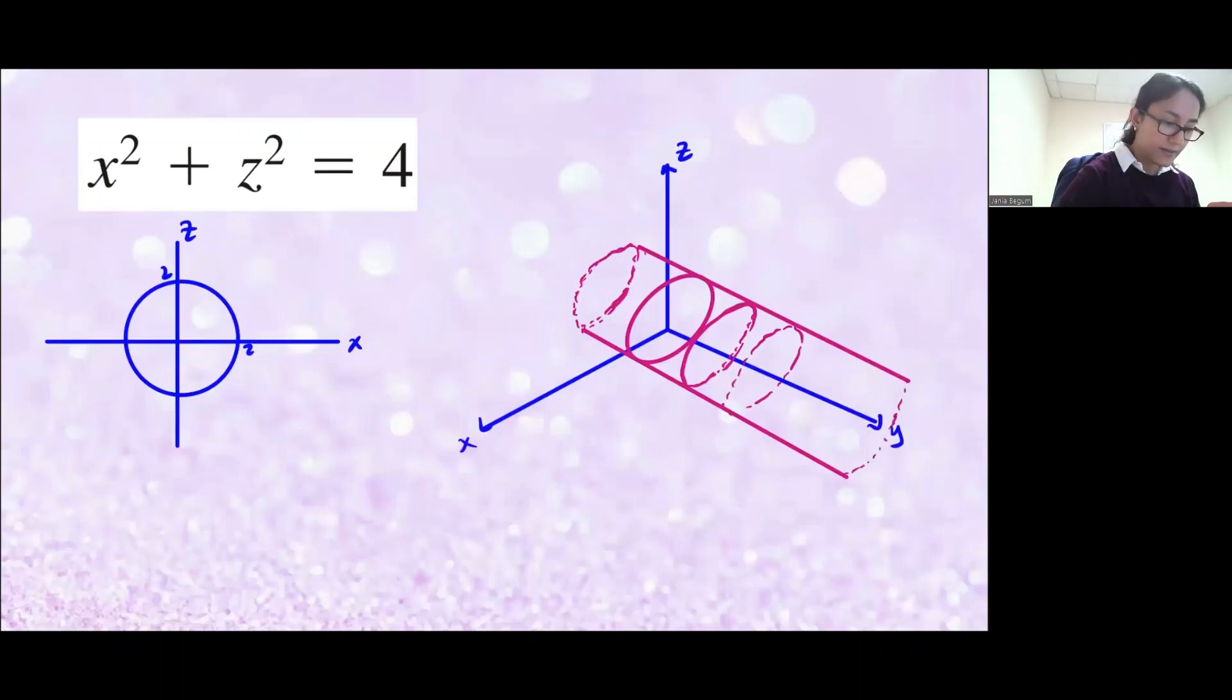Hopefully you got an idea of how to sketch cylinders by really tracing circles and extending it along the missing axis. Let me give you the 3D calculator picture so you have a better perspective on this.